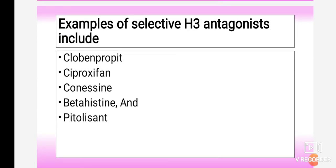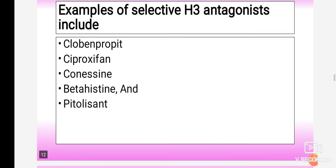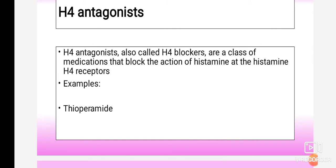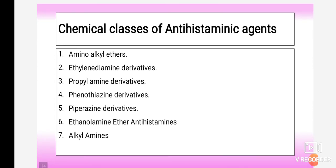Examples of selective H3 antagonists include tiprolisant, pitolisant, and betahistine. These are the drugs under H3 antagonist. For H4 antagonists, drugs that bind to the H4 histamine receptor include thioperamide.